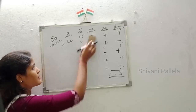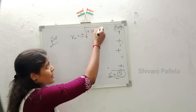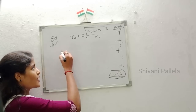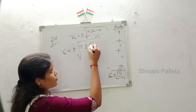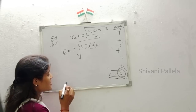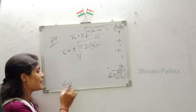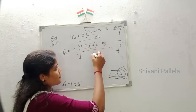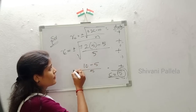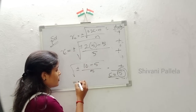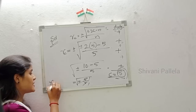Now substitute into the formula: rc = ±√(±(2c − n) / n). Here c = 5, so 2 × 5 = 10. Number of observations = 6, so n = 6 − 1 = 5. Therefore: rc = ±√(±(10 − 5) / 5) = ±√(5/5) = ±√1 = 1. So rc = 1.